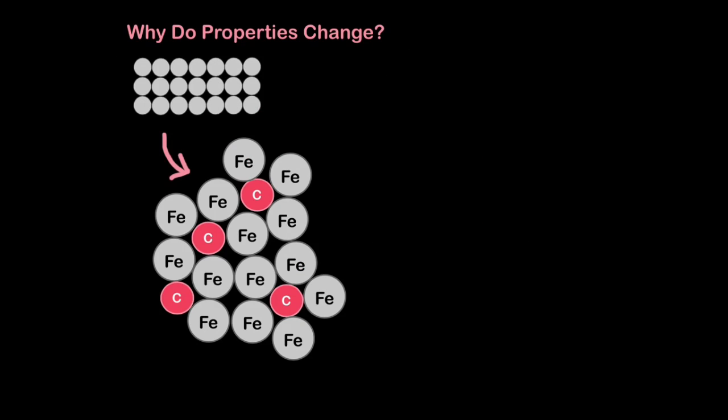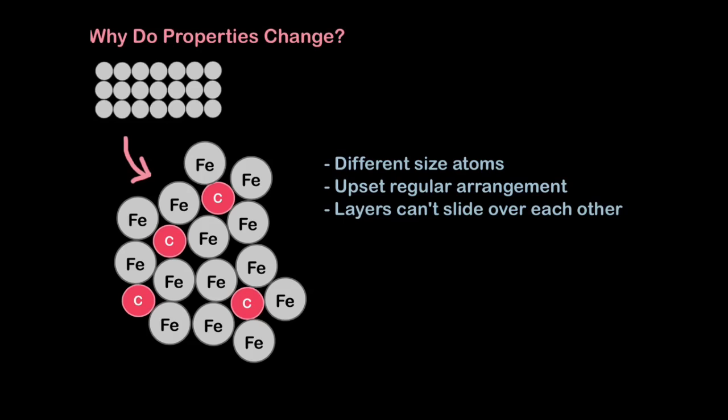So why do the properties change when we mix them with other metals? Well, the only example you need to know is why iron becomes harder when we mix it with other metals. If you remember pure iron, all the atoms are arranged regularly so they easily slide over each other. Look what happens when we add carbon. Carbon upsets the regular arrangement because we have different size atoms, smaller ones and larger ones. This makes it impossible to have this nice regular arrangement. So now we have upset the regular arrangement, but this isn't a bad thing. Because of this, the layers cannot slide over each other. This makes the iron, or rather steel now, much harder. This again has come up in exams again and again, and this is exactly what you would write down if presented with this problem.